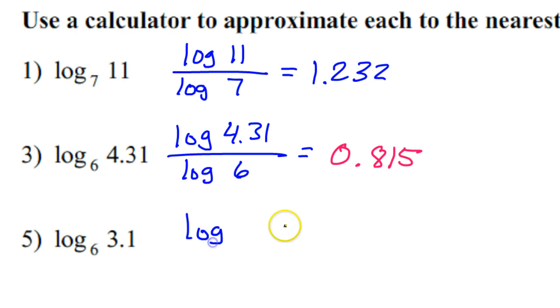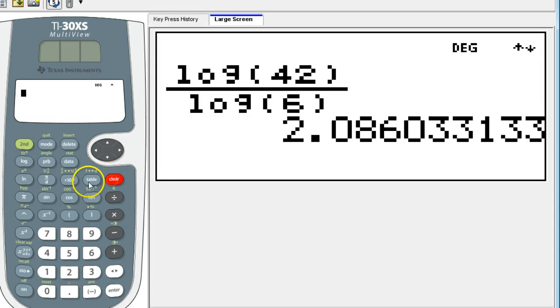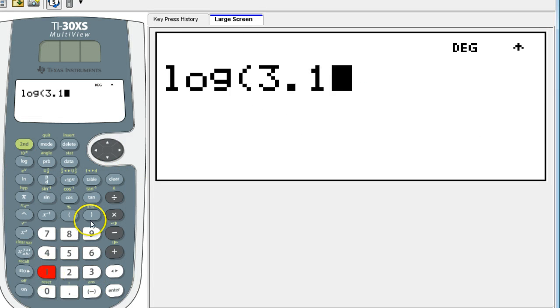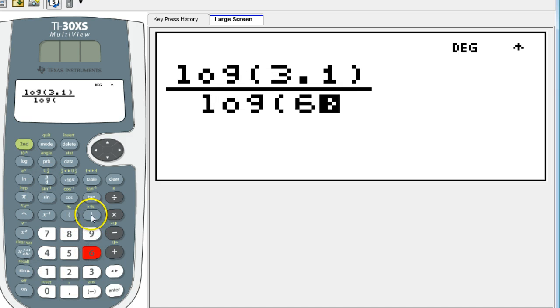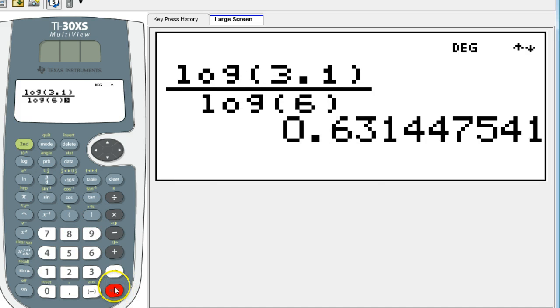Number five, this will be log 3.1 over log 6. 0.631.